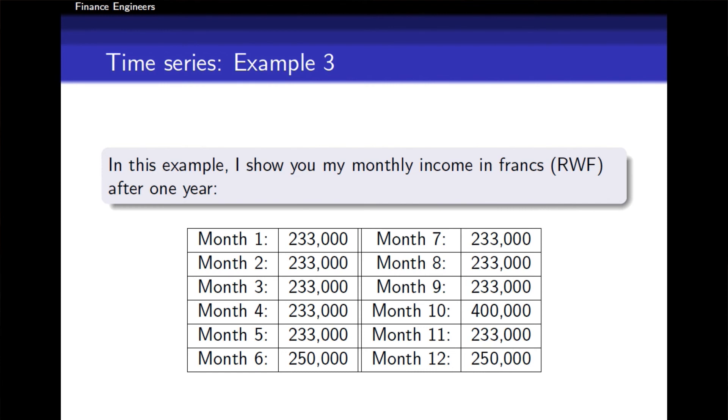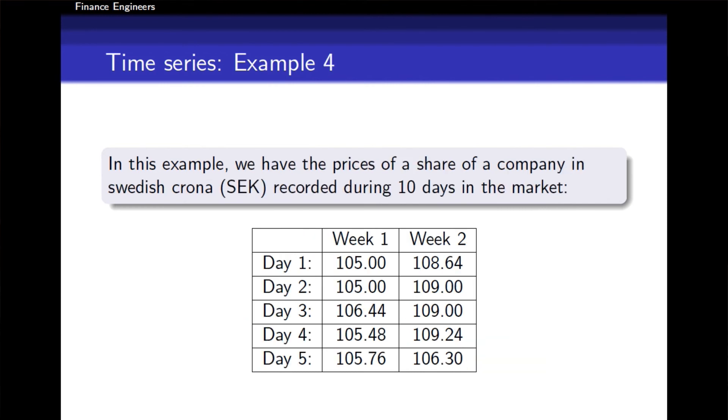In the fourth example, we have the prices of a share in a company. The currency here is the Swedish krona. During five days per week, the market opened for five days and this is how the prices were changing in the market for that share.